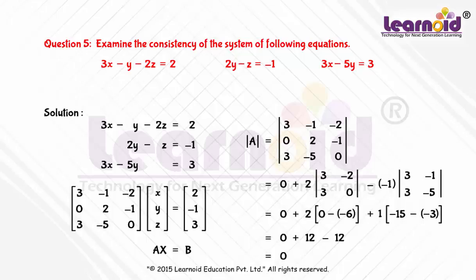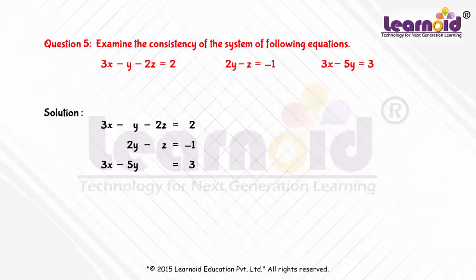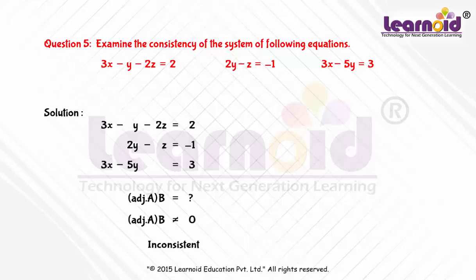When the determinant of A is equal to 0, A is a singular matrix. In this case, we will calculate adjoint of A into b. If adjoint of A into b is not equal to 0, then the system of equations is inconsistent.